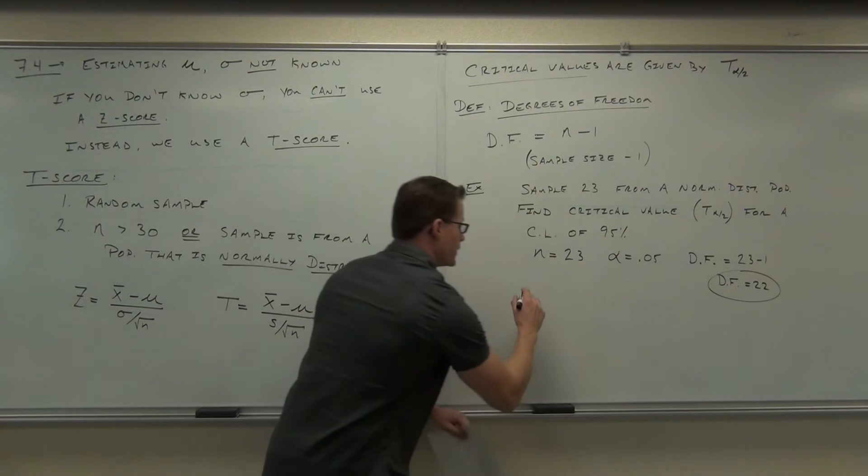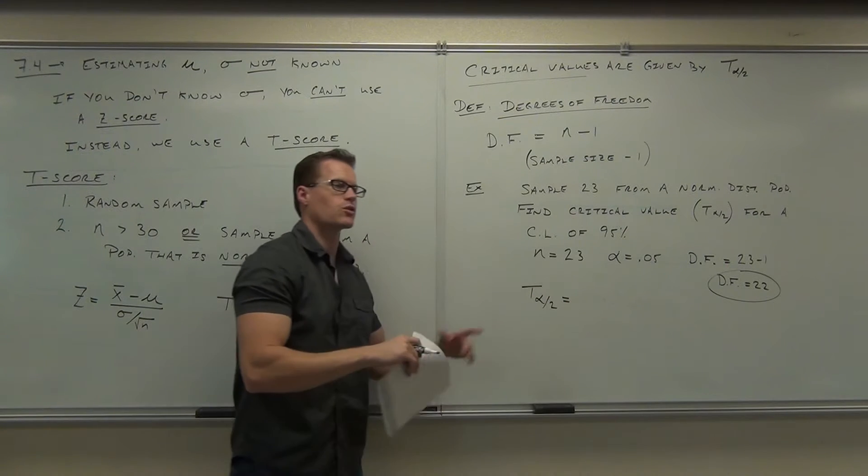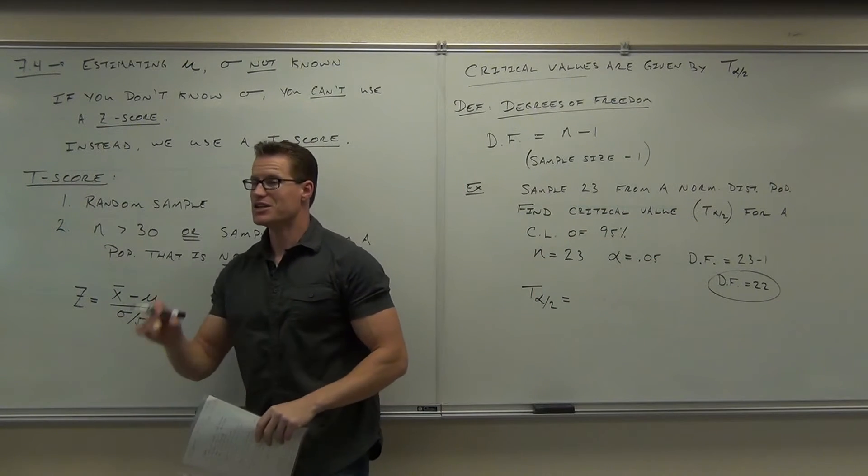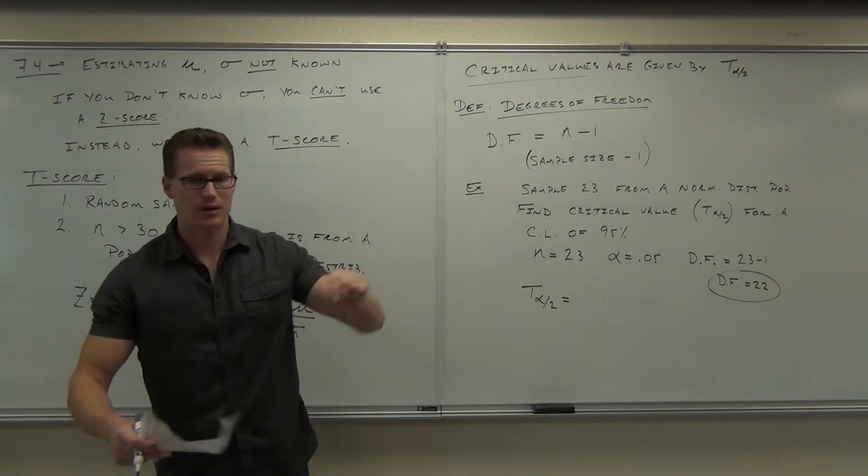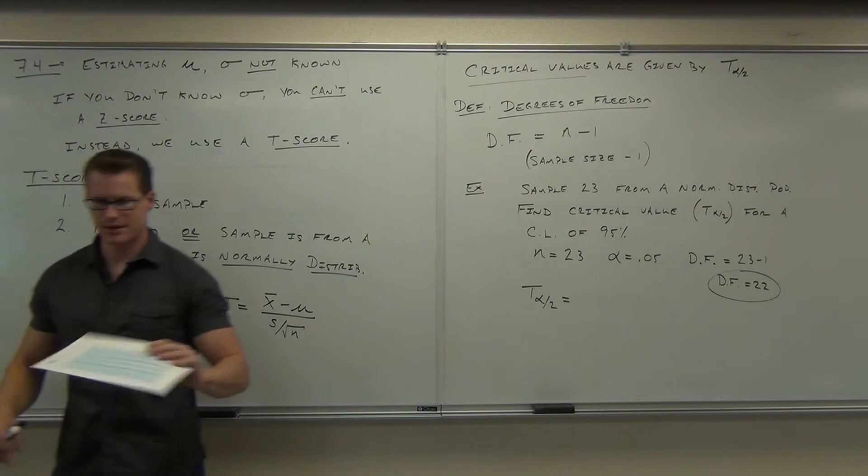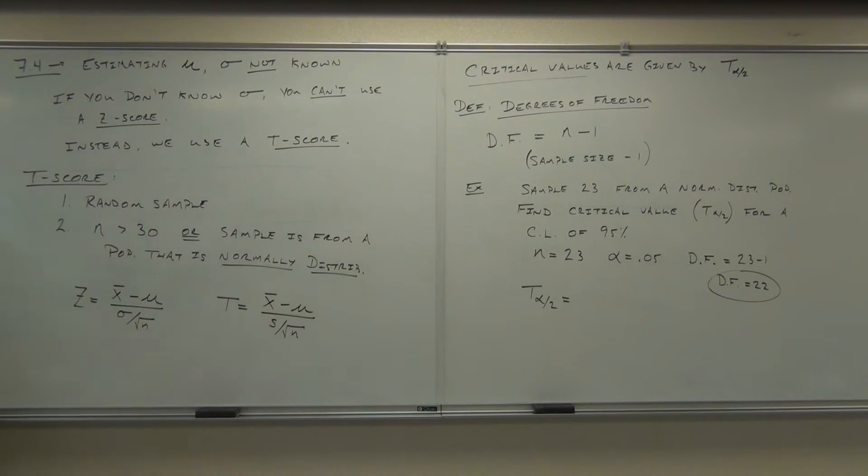Now we're going to find t alpha over 2. That's our critical value. We're going to go ahead and find that. I need you to take out your tables. You know that pull-out sheet that you all have? It looks like this, or it's in the back of your book. It's table A3, so find your A3 for me.